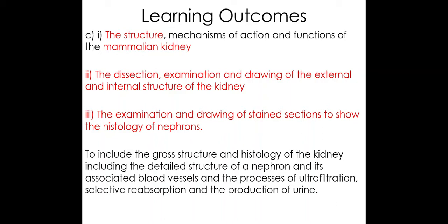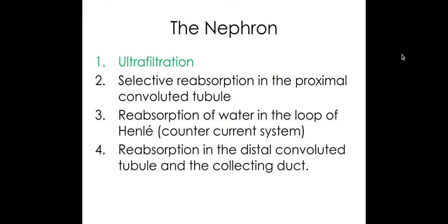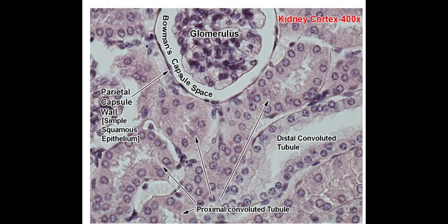Welcome biologists to this session where we'll be looking at the functions that occur within the mammalian kidney. This is part two of spec point C and we're going to be taking a look today at ultrafiltration. If you look under a microscope slide at this part of the nephron where ultrafiltration takes place, you'll be looking at the Bowman's capsule and the glomerulus.